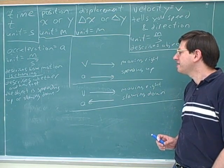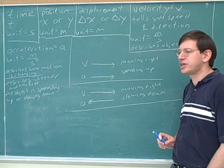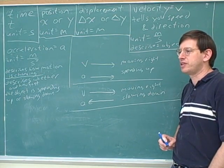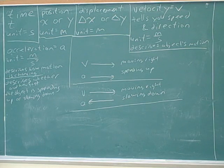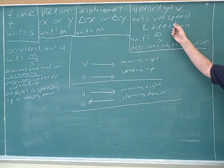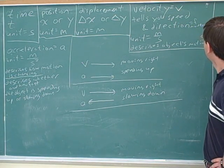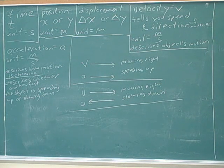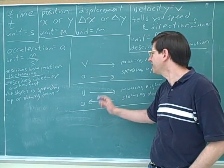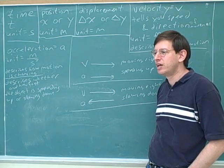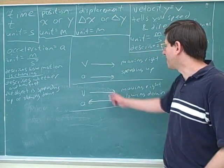Here's where people get confused: notice that the acceleration tells you nothing about which way the object is moving. That's the mistake people repeatedly make. Acceleration tells you nothing about the direction of movement — that's the velocity's job. It's the velocity's job to tell you direction of movement, and the acceleration's job to tell you whether you're speeding up or slowing down. A lot of people would look at a leftward acceleration arrow and say the object is moving to the left — but that's not right. They should be looking at the velocity arrow to determine direction of movement.